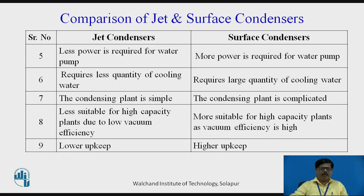In case of a jet condenser, less power is required for the water pump because of direct mixing of exhaust steam and cooling water, resulting in a higher heat transfer rate and less cooling water required. Whereas in case of a surface condenser, a large quantity of cooling water is required — more than 100 kg per kg of steam — and therefore the power required for the cooling water pump is also more. With a jet condenser, the condensing plant is simple, whereas with a surface condenser, more elements are required and the plant becomes more complicated.